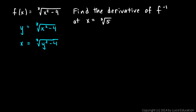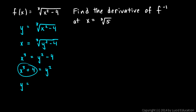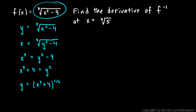Then solve for y. To do that, we cube both sides: x cubed equals y squared minus 4. Add 4 to each side: x cubed plus 4 equals y squared. Then square root both sides. So y equals x cubed plus 4 to the one half. What we have just found is the inverse of our original function.